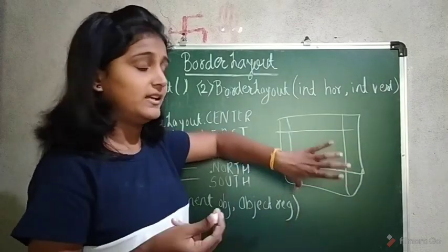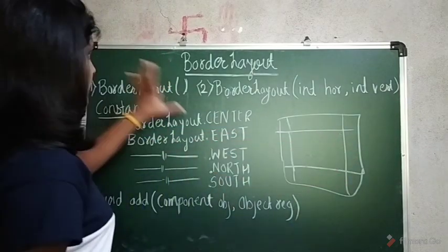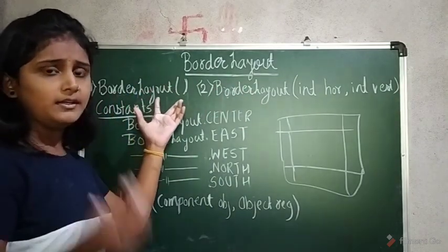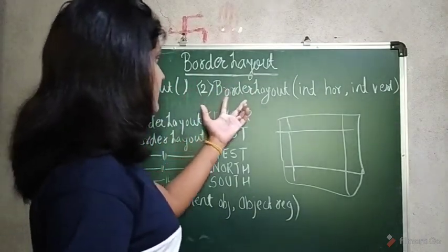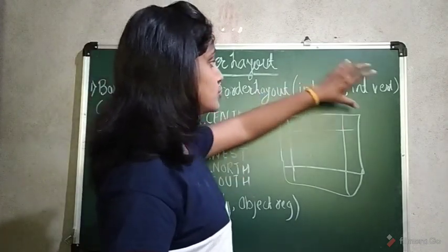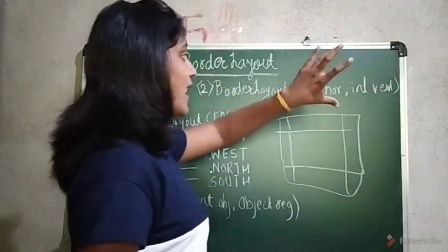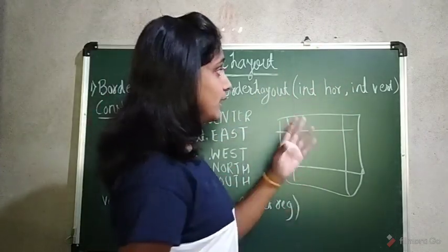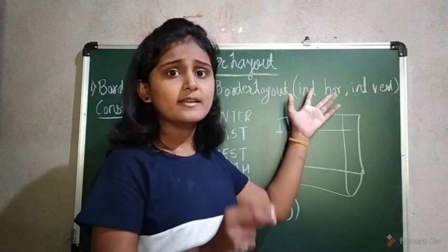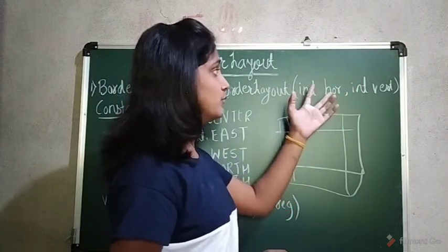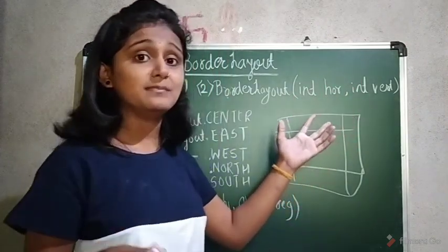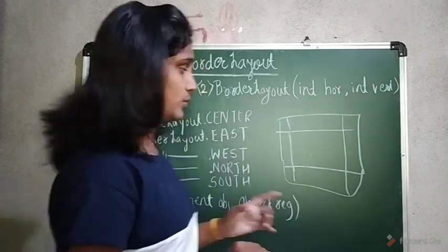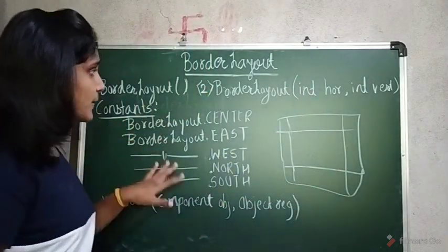Now let's see how exactly we use BorderLayout in Java. There are two constructors: the first one creates a default layout, and the second one takes two parameters — vertical and horizontal — where you specify the spacing between components arranged in the border layout.